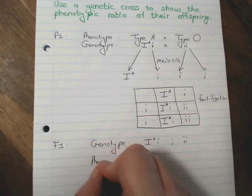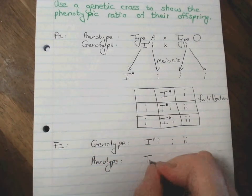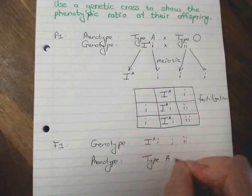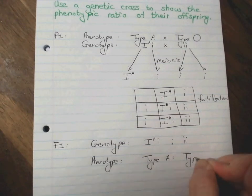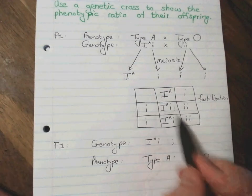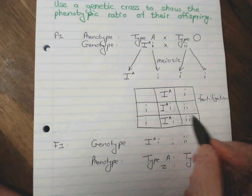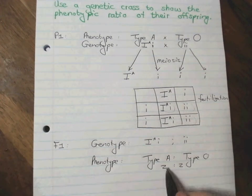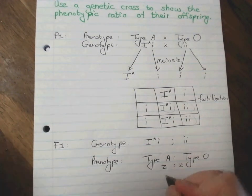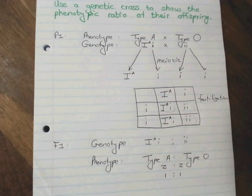Okay. And then if we have a look at the phenotype, that means we will have a type A and we will have a type O. And since there's one, two type A's and there's one, two type O's, and remember we never leave a ratio like that. We always simplify the ratio.